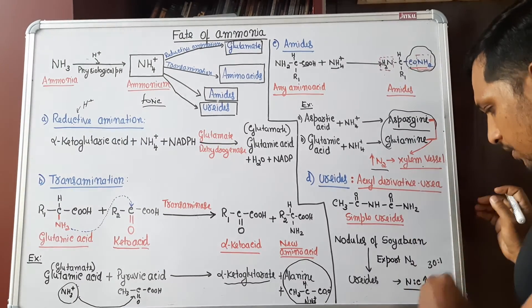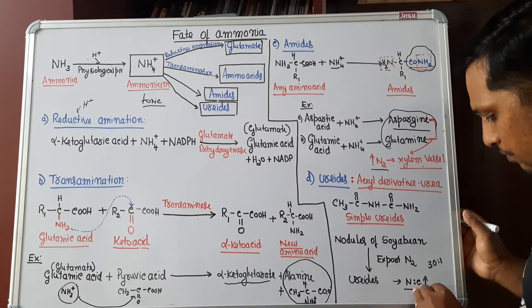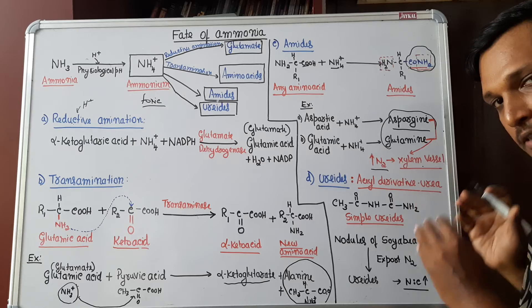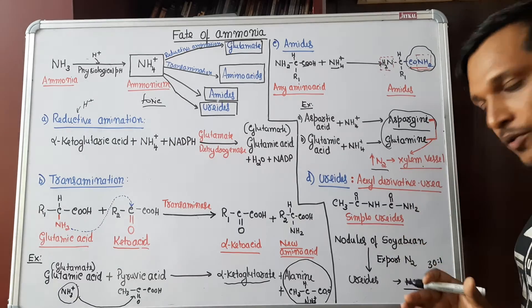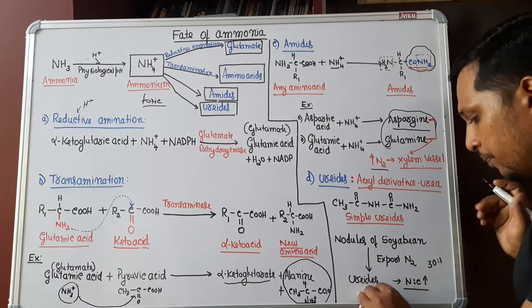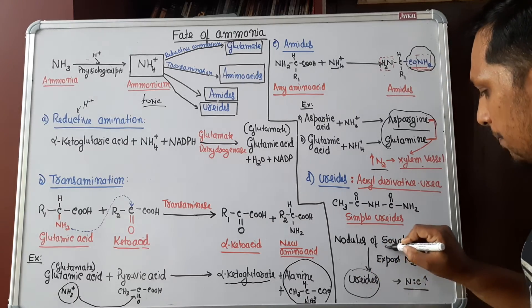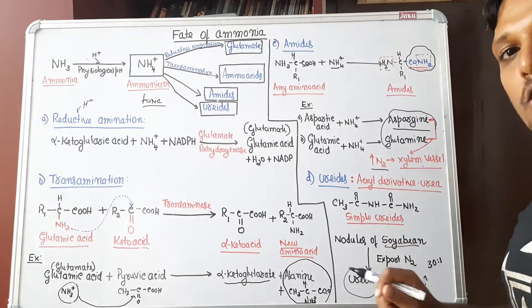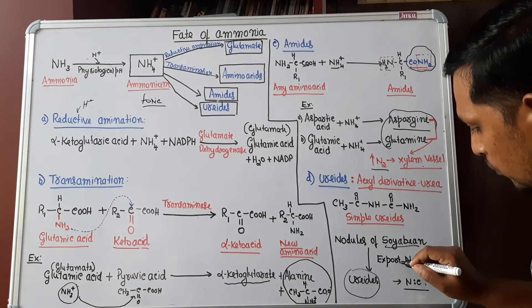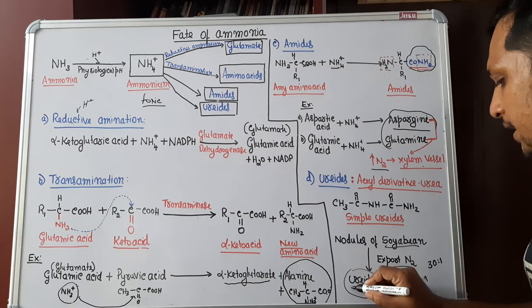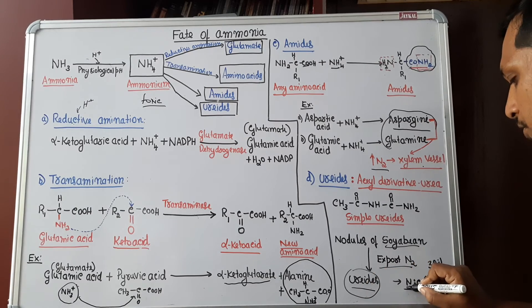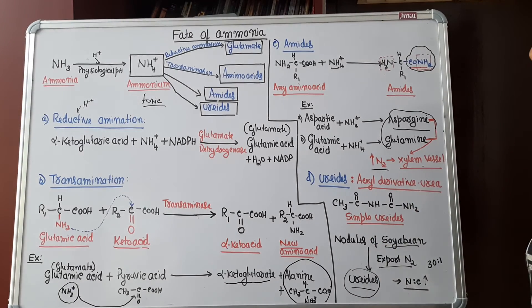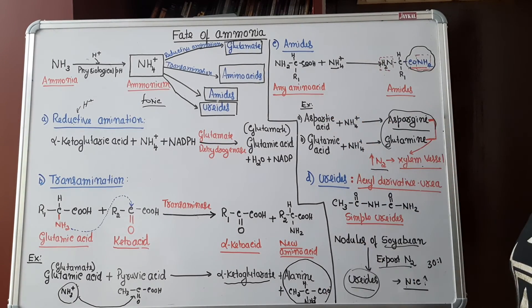For timing, you can remember that. Hence, urides will be having more nitrogen to carbon ratio. Therefore, it is beneficial for the plant in nutrient cycling. The plants, especially soybean plant. Soybean plant is an example for plant containing nodule. Nodule containing plants is found to export nitrogen in the form of uride. As I mentioned, urides will be having high nitrogen to carbon ratio. So that is the benefit for plant. These are the four fates of ammonia.